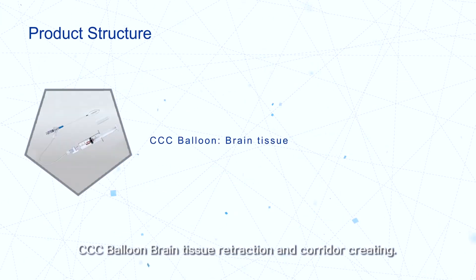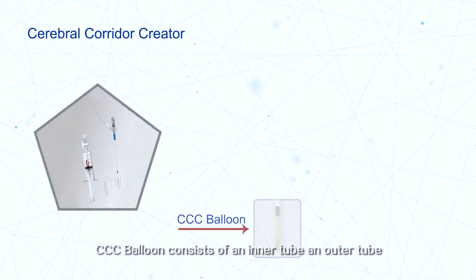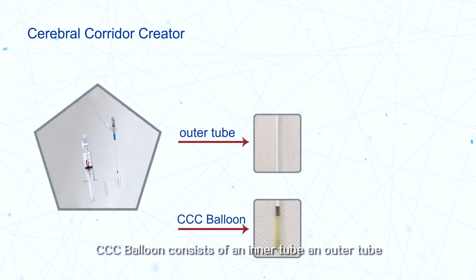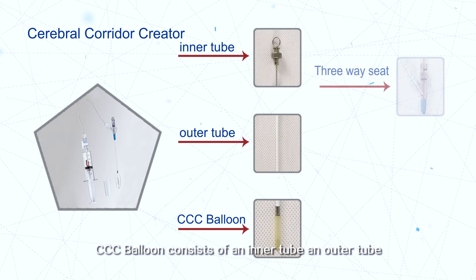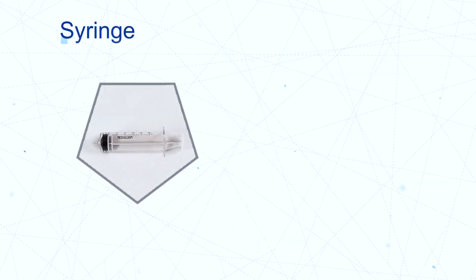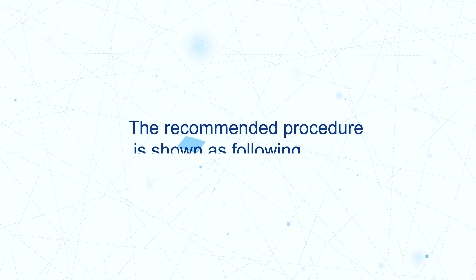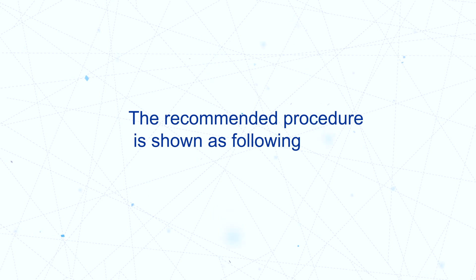Product Structure: The CCC Balloon, used for brain tissue retraction and corridor creation, consists of an inner tube, an outer tube, a rubber balloon, a three-way stopcock, and a connector. The Syringe is used for inflating the balloon, and the Tube is used for maintaining the corridor.